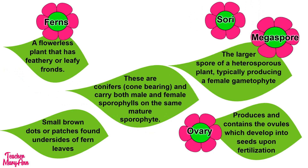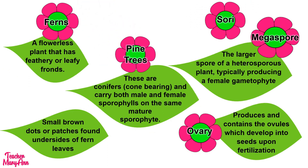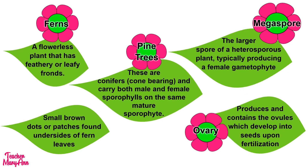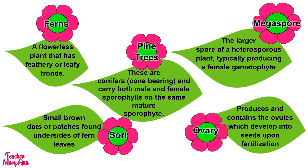Then, pine trees. Okay, so pine trees: these are conifers or cone-bearing and carry both male and female sporophytes on the same mature sporophyte. And our last flower goes here: small brown dots or patches found on the undersides of fern leaves.